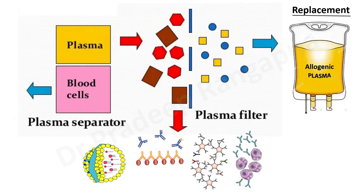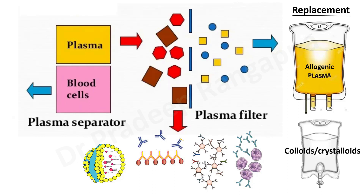Once the plasma is separated from the blood and purified, replacement fluid has to be given. This replenishment can happen with allogeneic plasma, commonly fresh frozen plasma, or it can be replaced with colloids and crystalloids. We will look at which conditions require only plasma as a replacement fluid and other conditions where colloids and crystalloids are used and in what proportion.